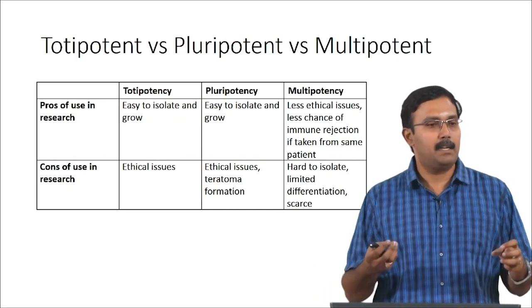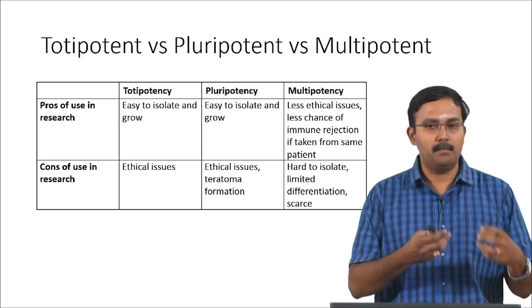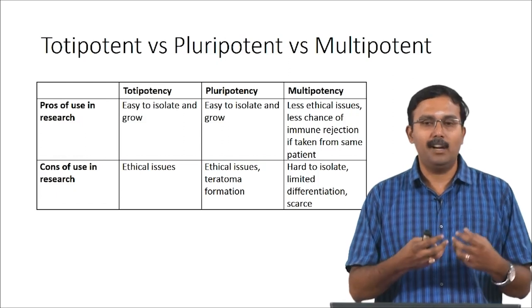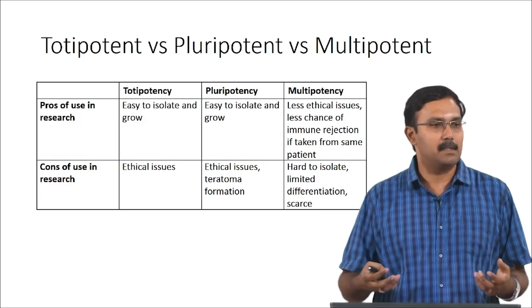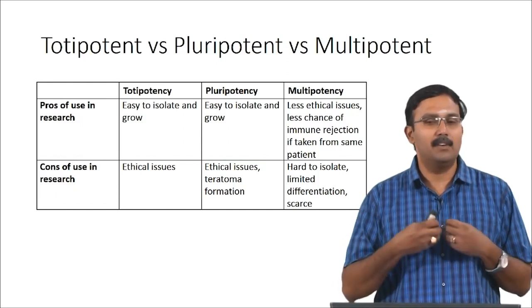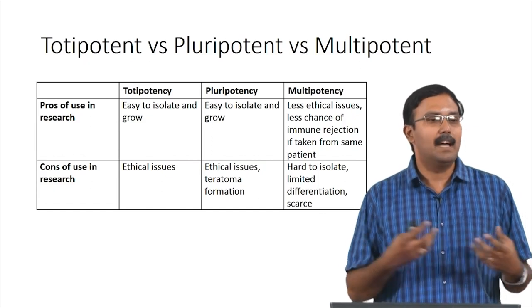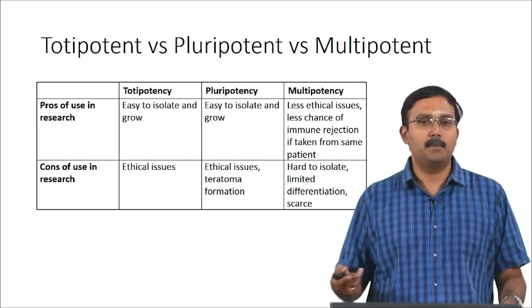Cord blood cells are why people store cord blood — hoping to use these multipotent stem cells eventually. The disadvantages with totipotent and pluripotent stem cells are ethical issues, and with pluripotent stem cells there is also a chance of teratoma formation. Multipotent stem cells are very difficult to isolate, have limited differentiation potential, and are not available in large numbers. When you aspirate blood from bone marrow, you get only very few stem cells from the aspiration.